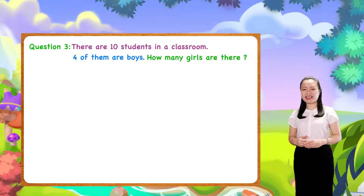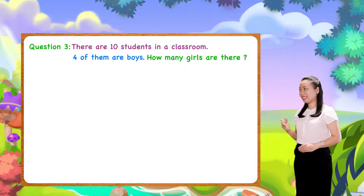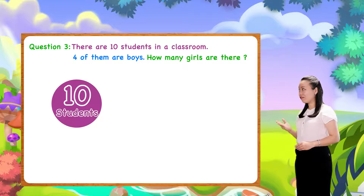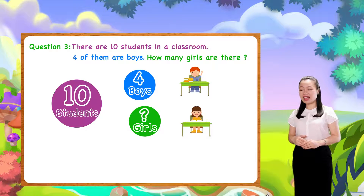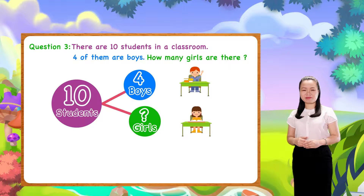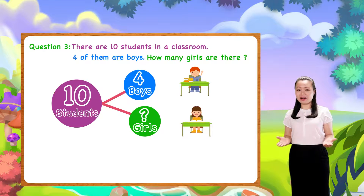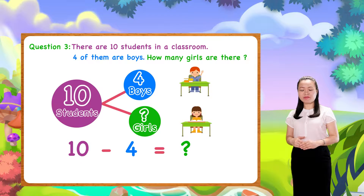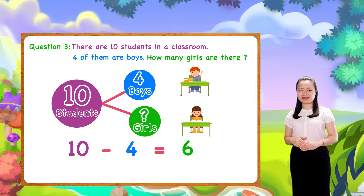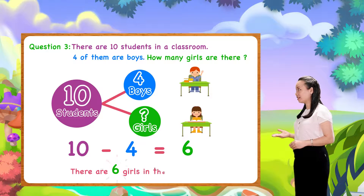Let's find the answer together. There are 10 students in the classroom. 4 of them are boys. The rest should be girls. We can use a number bond to model this problem. So, to find the number of girls, we subtract the other part from the whole. Here, we subtract 4 from 10. We get 6. We conclude: there are 6 girls in the classroom.